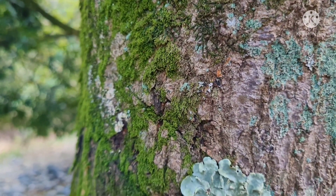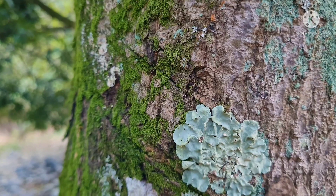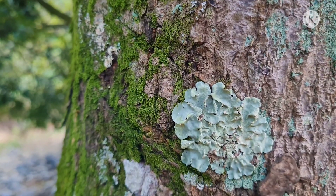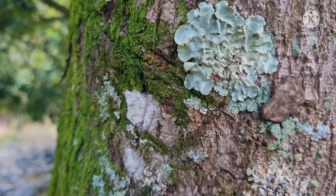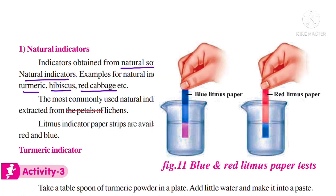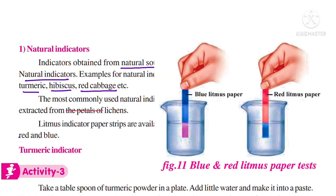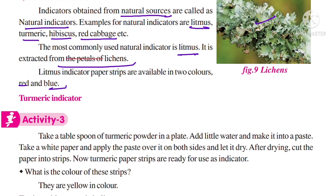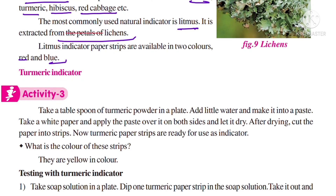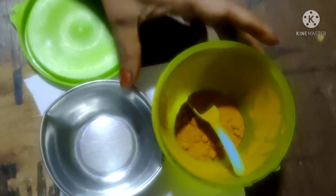In the laboratory we generally use litmus papers, which are available in two colors: red and blue. Litmus is extracted from the petals of lichen. See the video — this is a lichen, and litmus is extracted from this lichen.